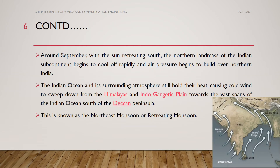The second category is the northeastern monsoon, which normally occurs around September as the sun retreats south. During this period, the northern landmass and Indian subcontinent begin to cool off rapidly, and air pressure begins to build over northern India. The Indian Ocean and surrounding atmosphere still hold heat, causing cold winds to sweep down from the Himalayas and Indo-Gangetic Plain toward the vast span of the Indian Ocean south of the Deccan Peninsula. This is known as the northeastern monsoon or retreating monsoon.